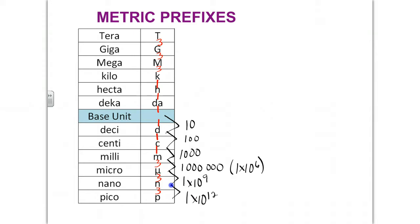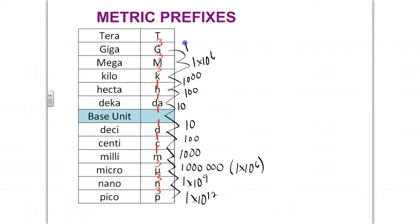It's going to be the same as we go upwards, and I'll explain why when we do an example. From the base to deca, it's 10. From the base to hecta, it's 100. From the base to kilo, it's 1,000. From the base to mega, it's 1 times 10 to the 6. From the base to giga, it's 1 times 10 to the 9. And from the base to terra, it's 1 times 10 to the 12. Notice we're always counting from the base unit. Let's do an example.